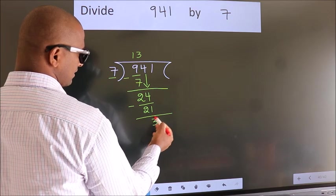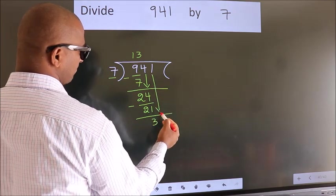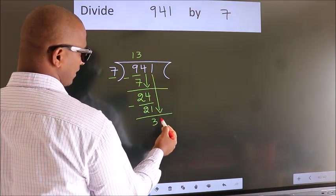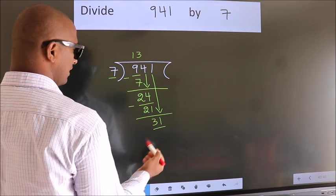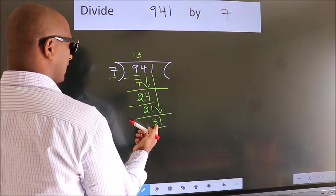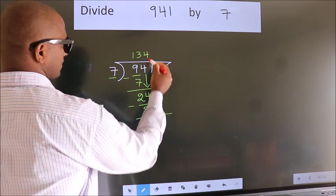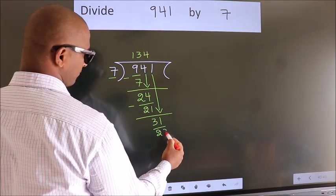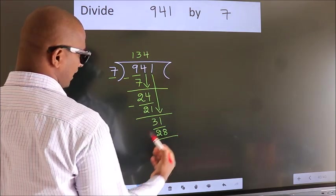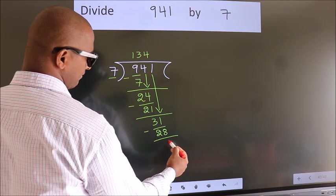After this bring down the next number. So 1 down, so 31. A number close to 31 in the 7 table is 7 times 4 is 28. Now we subtract. We get 3.